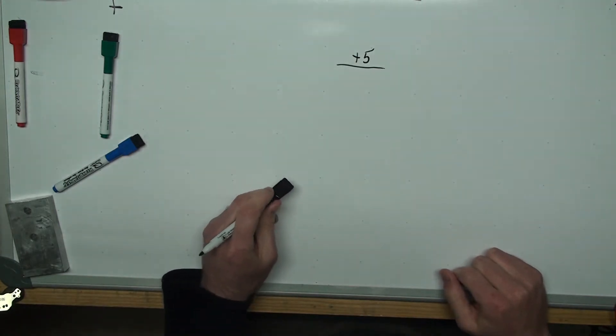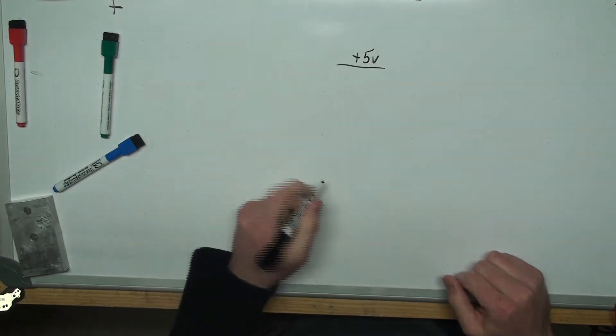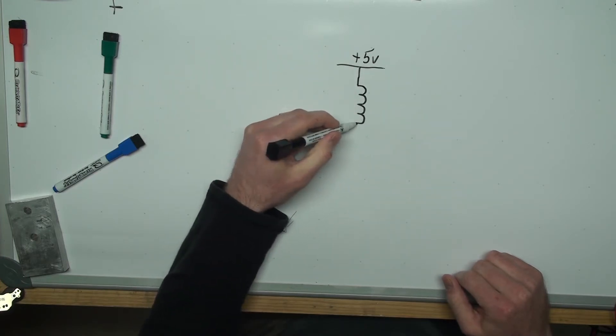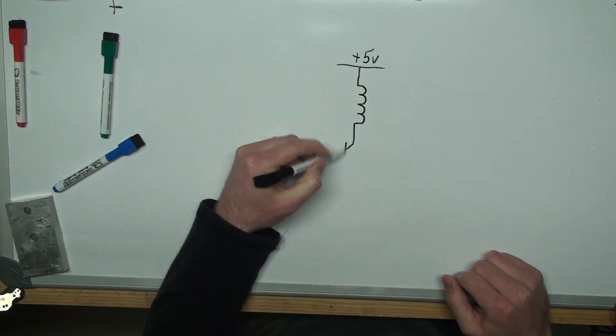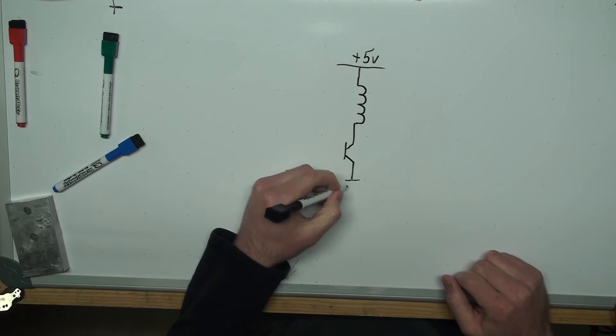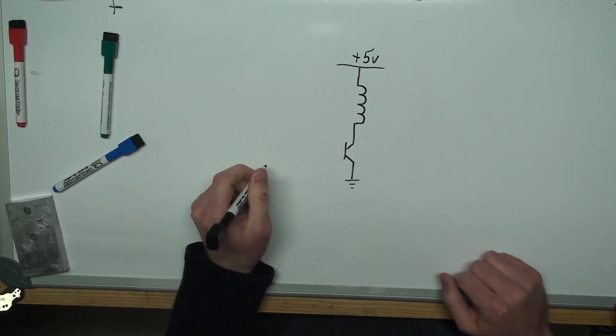I'm going to be using a very small electric motor. We're going to represent that here in our schematic with just the inductor symbol, and then that's going to be going into a bipolar junction transistor. Specifically, it's a 2N2222.